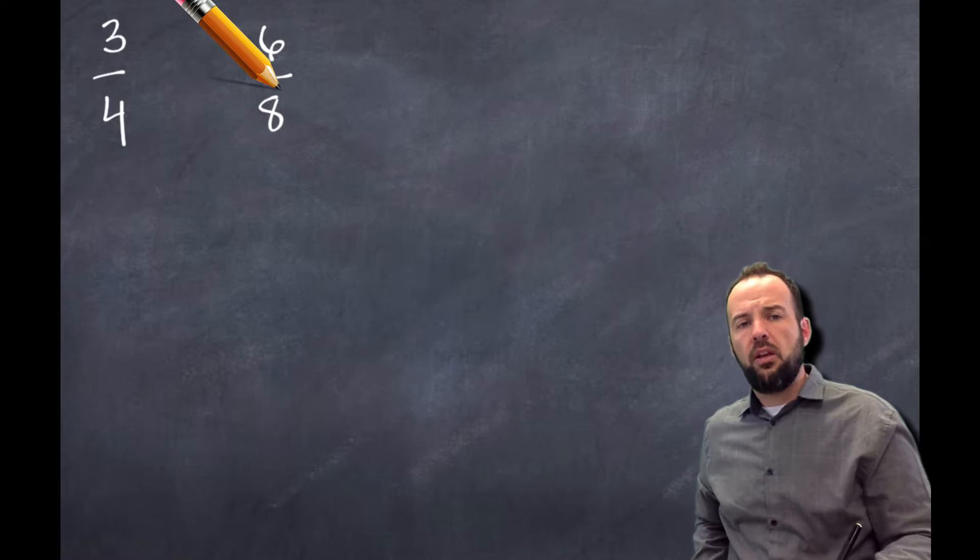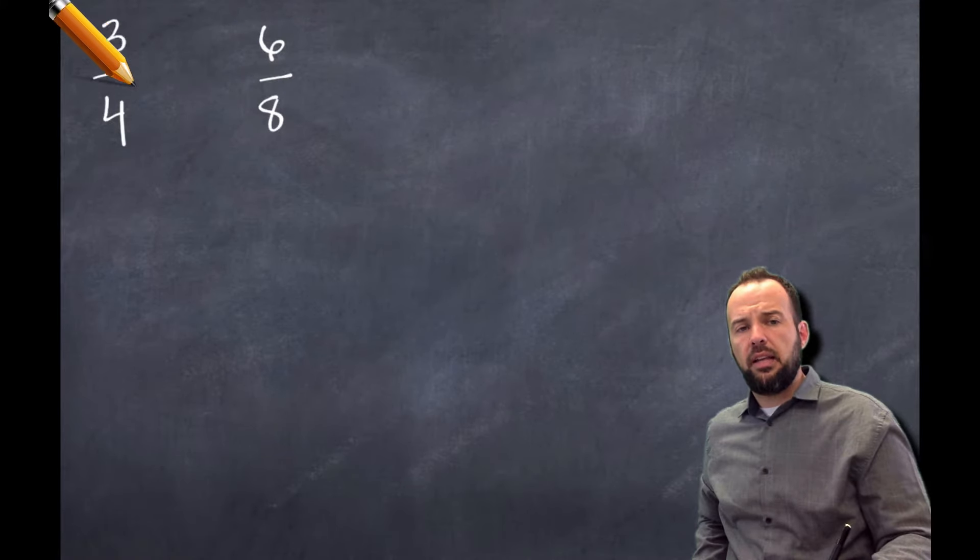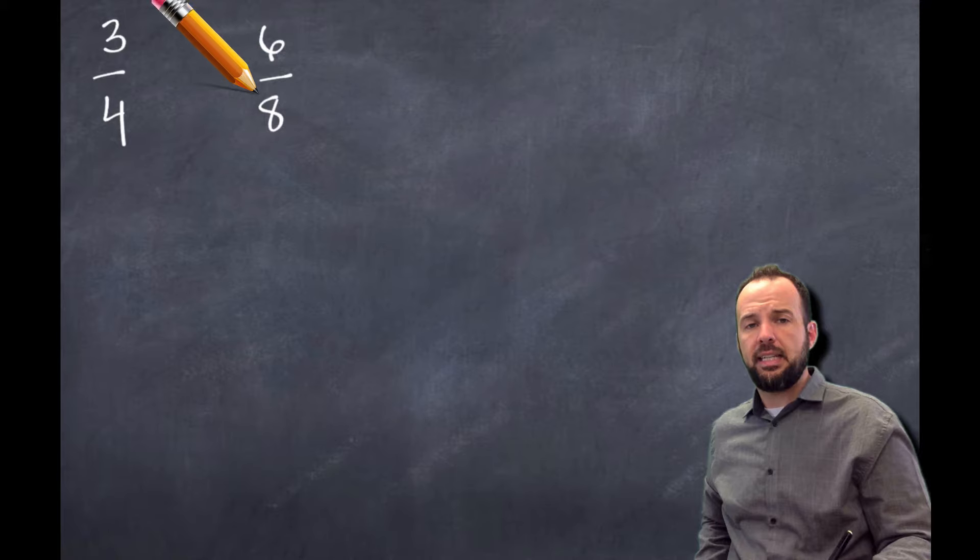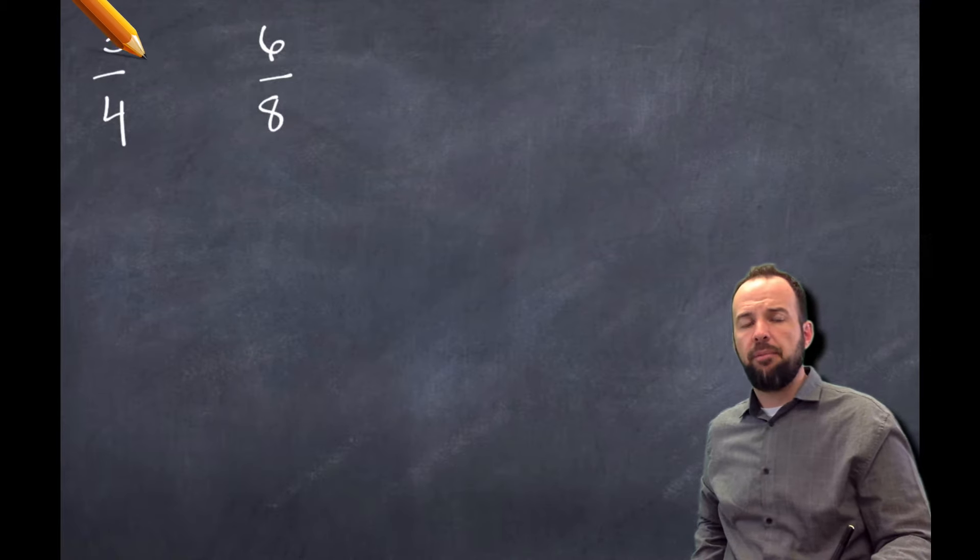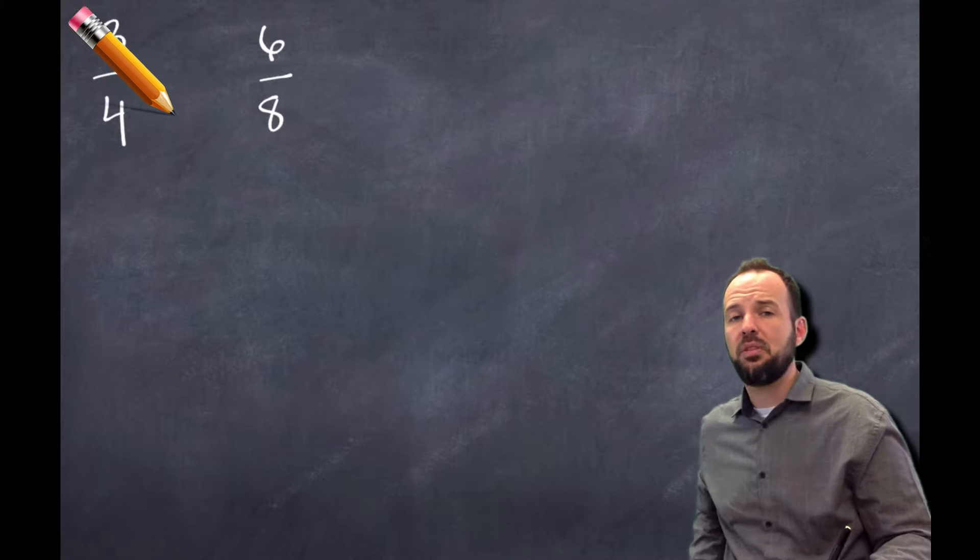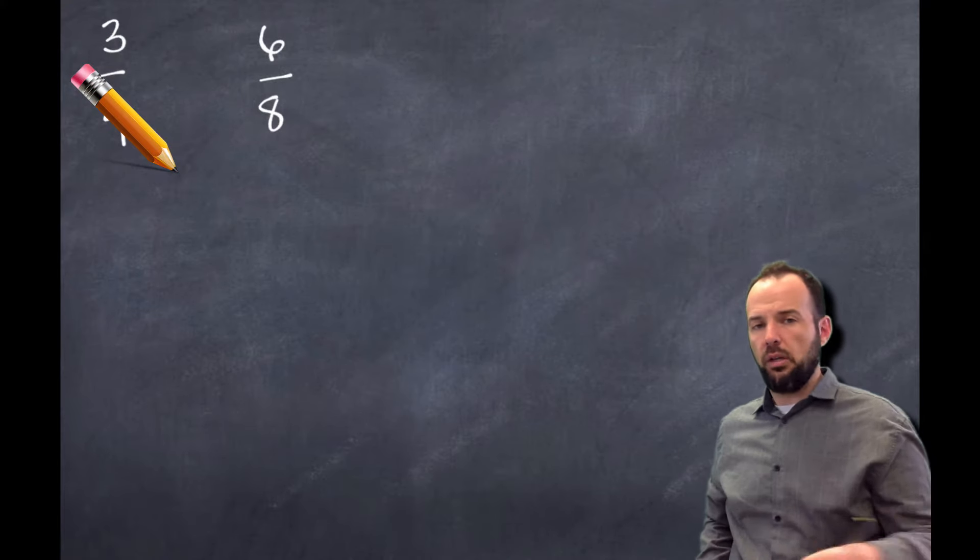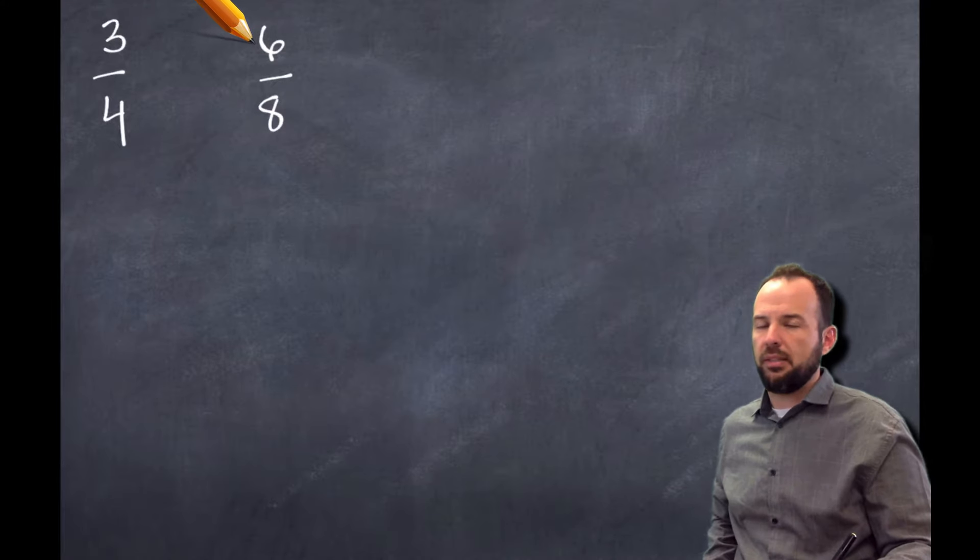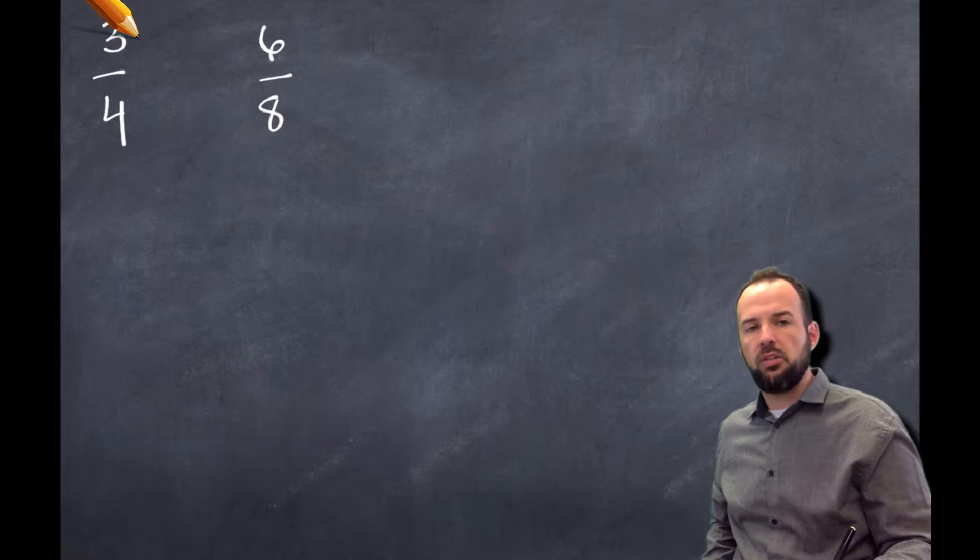We could, and here's how. We could think, is there a number, any number that I could multiply both my numerator and denominator by to get to 6/8? Can I multiply 3 times something to get 6 and 4 times that same something to get 8? Well, let's figure this out. Well, I want to start with one. 3 times 1 wouldn't be 6, it would be 3. So that's not going to work. What about 2?